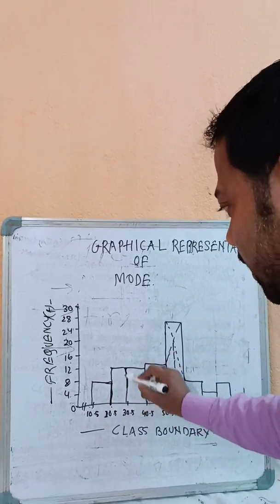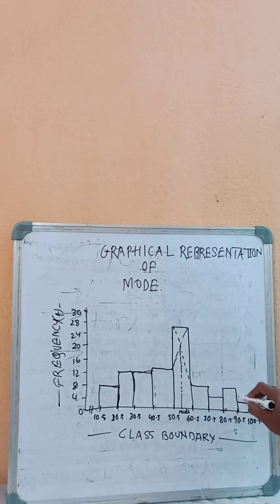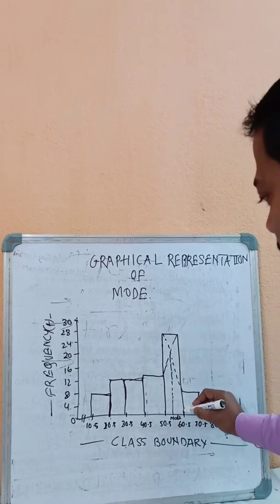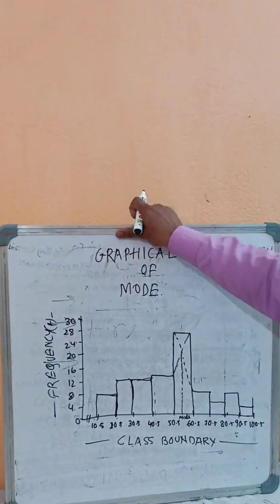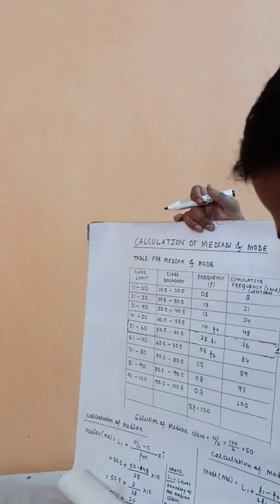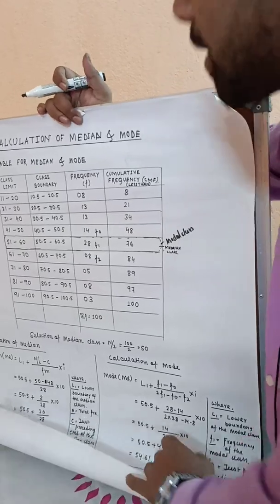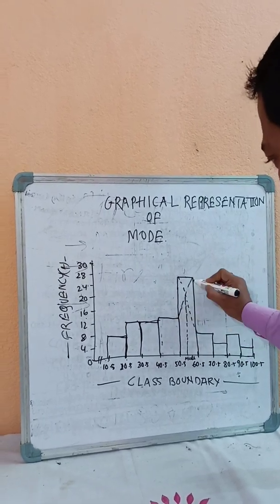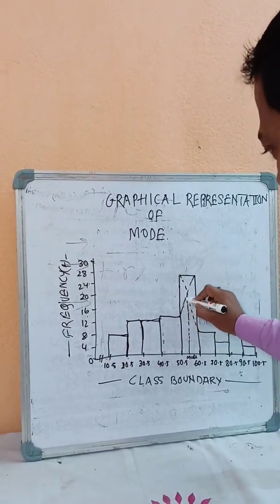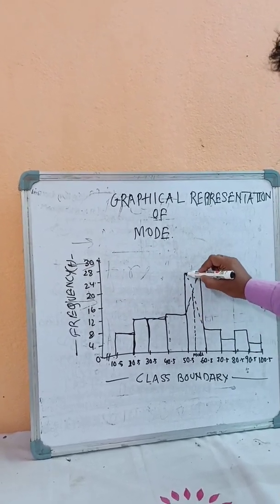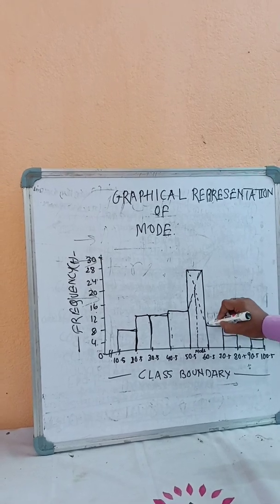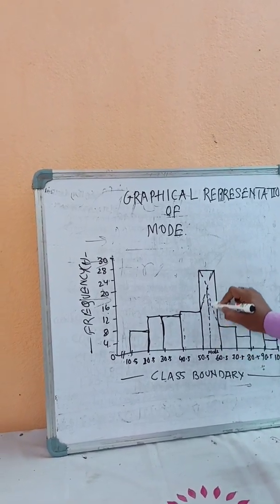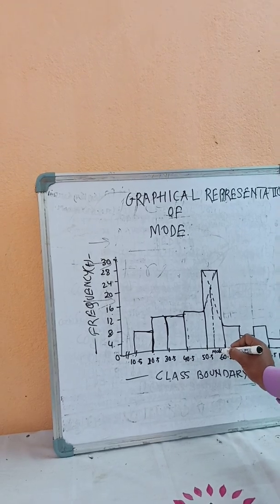The frequencies shown are 14 for one class, 13 for the next, and 28 for the modal class. We go to the modal class and the mode value calculated is 54.61. A dotted line is drawn from the top of the modal bar to indicate this mode value on the x-axis.